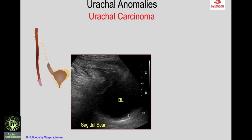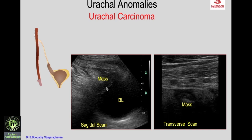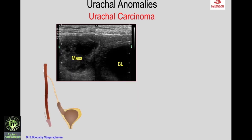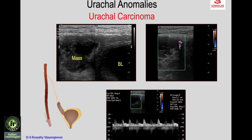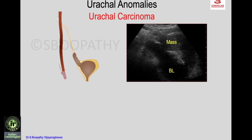A rare condition is urachal carcinoma. A patient presenting with hematuria shows on sagittal scan the bladder dome with an irregular heterogeneous mass, and high-frequency scan reveals enlarged lymph nodes in the peritoneal space, confirming urachal carcinoma. Another example shows an irregular thick-walled cyst close to the dome of the bladder with color Doppler showing flow within the thick walls and a low-resistance flow pattern.